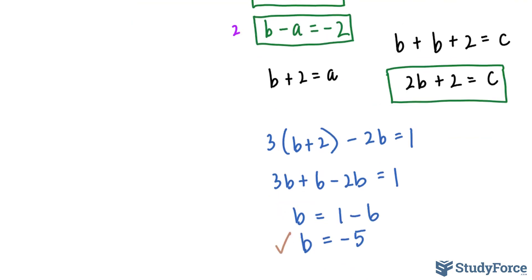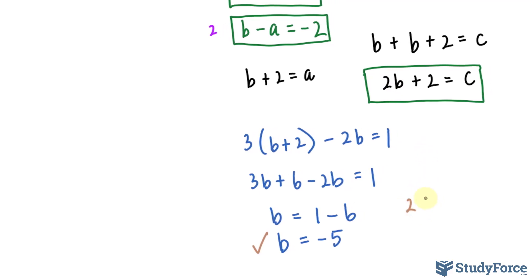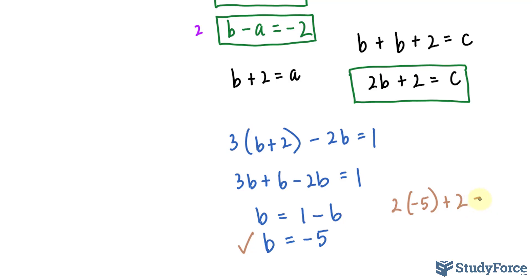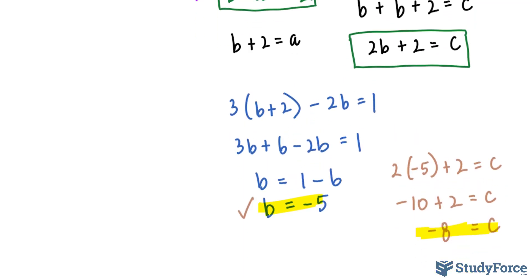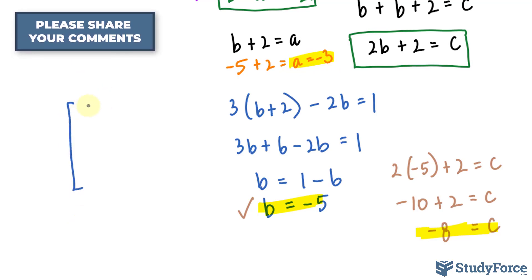We'll substitute this into there, where we have 2 times -5 plus 2 is equal to C. That's -10 plus 2 is equal to C, and that is equal to -8. So we found another element in that unknown column. And to find A is as simple as substituting -5 into there, which gives us an A value that is equal to -3. Therefore, our unknown column will have the elements -3, -5, and -8.